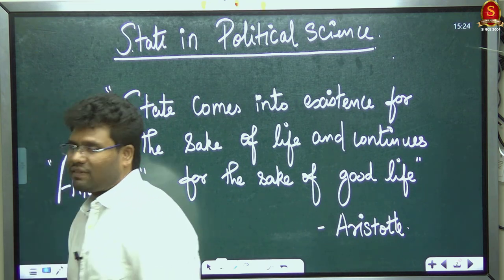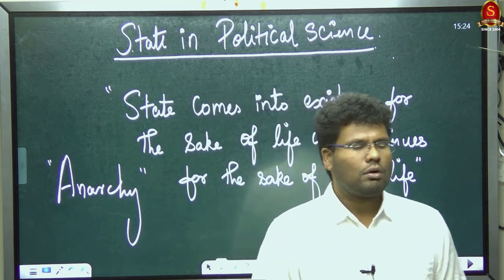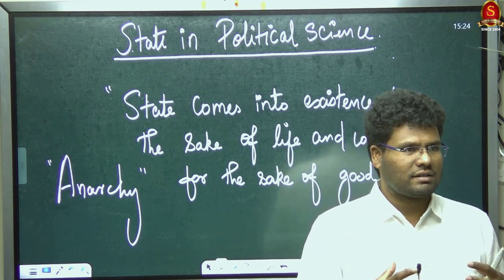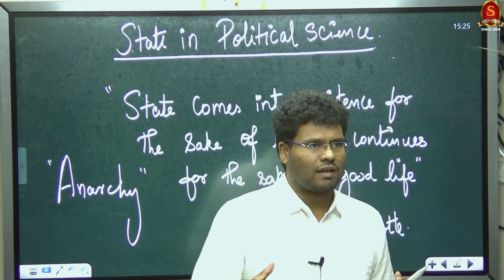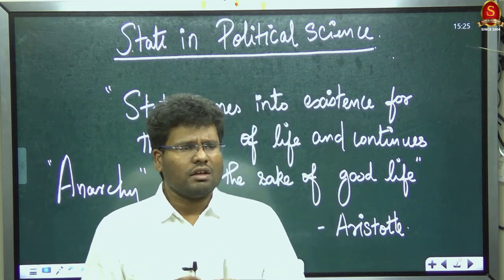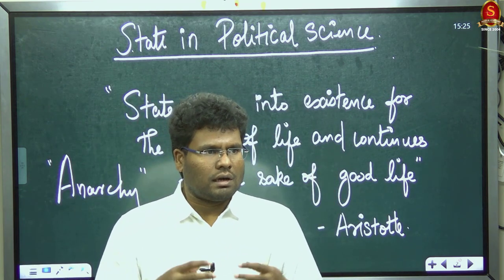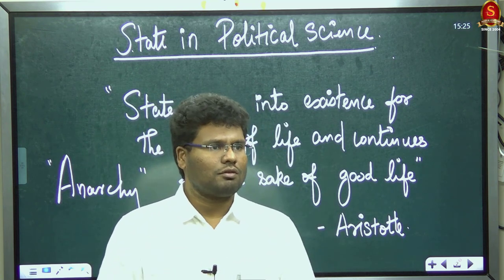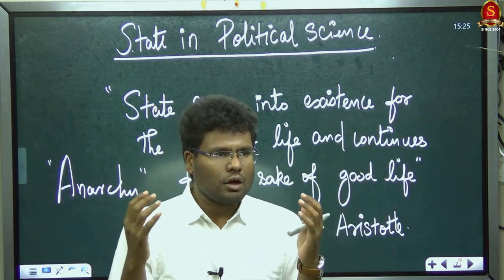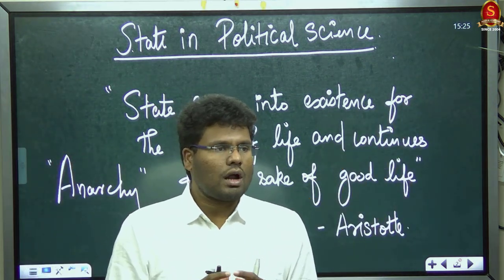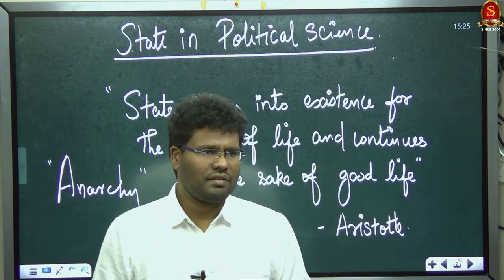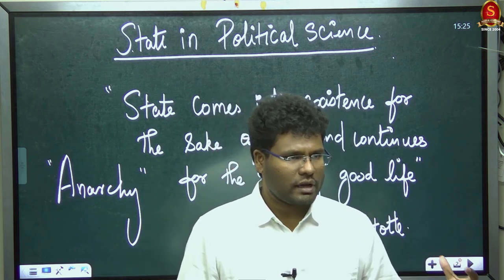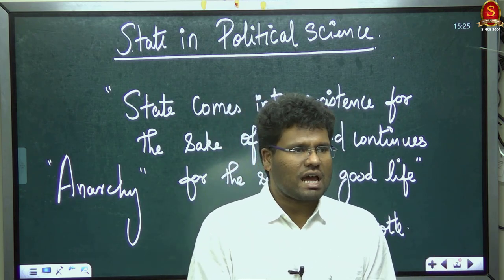For example, in a forest there is no law. The forest functions on 'might is right' — whatever the lion says is the rule. That is why the lion is called the king of the forest. Small animals, insects, and birds have no say. Whatever the lion says is the rule. This is called the law of the forest, or lawlessness — this can be called anarchy.